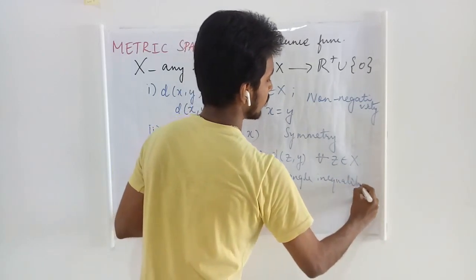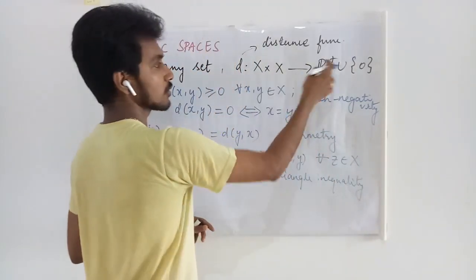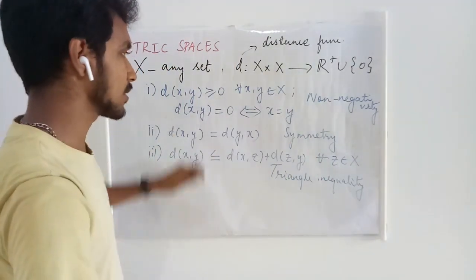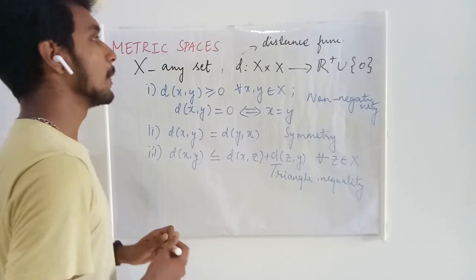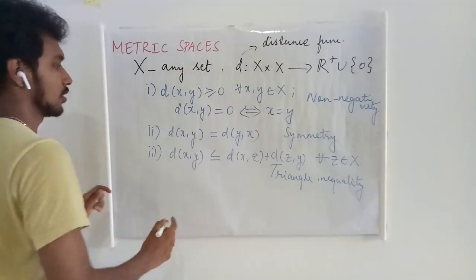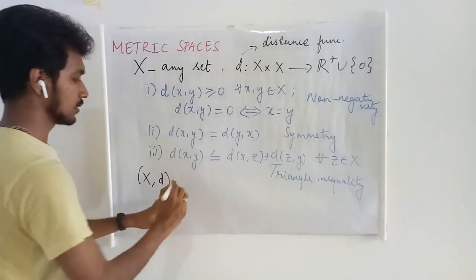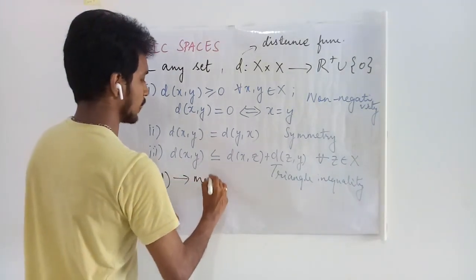If a mapping defined from X cross X to the set of non-negative real numbers satisfies these conditions, it is known as a metric or distance function. Then this set X along with this metric is called a metric space.